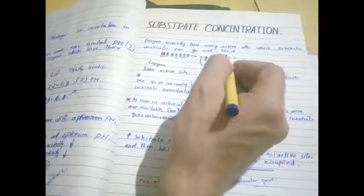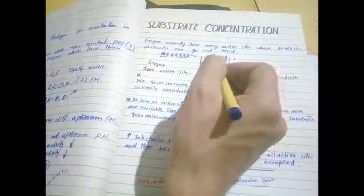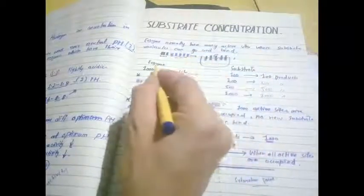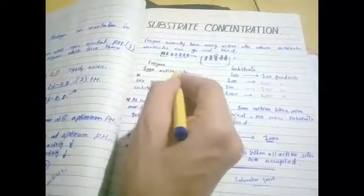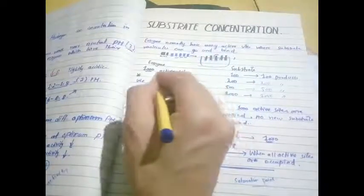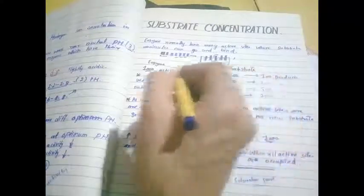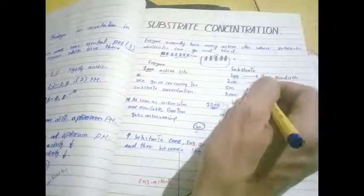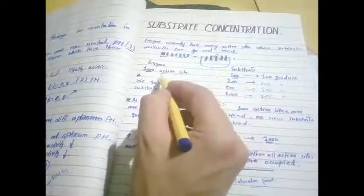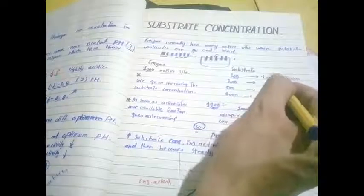Until the active site is filled, no further increase will come. For example, we have an enzyme with 1000 active sites. On the other side, we have a specific substrate. If we take 100 substrate molecules, then out of the 1000 active sites, 100 active sites will be filled. So how many products will be made? 100 products will be made.